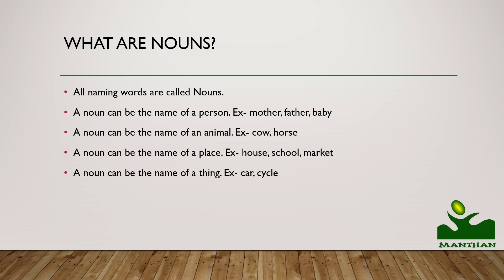Just examples hum dekhte isme. A noun can be the name of a person — example: mother, father, baby. It can be the name of an animal also — example: cow, horse. It can be the name of a place, like you stay in your house, you go to school, I am going to market. So these are different places, and these are also nouns.